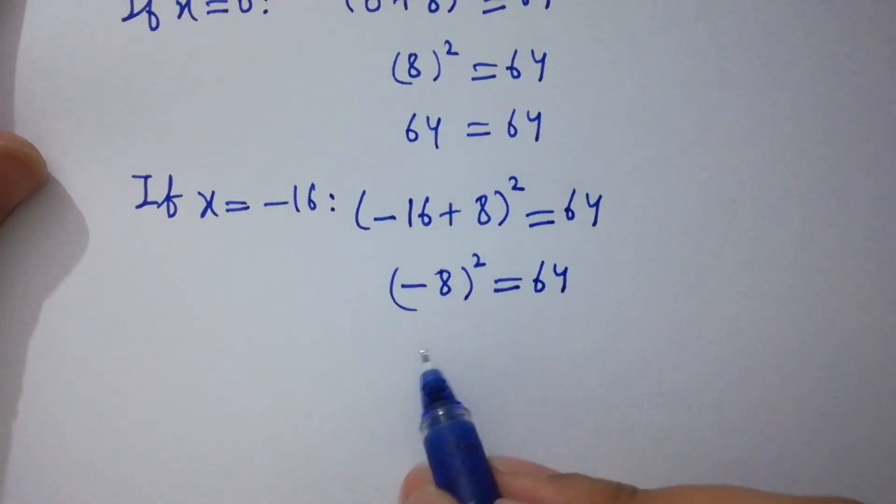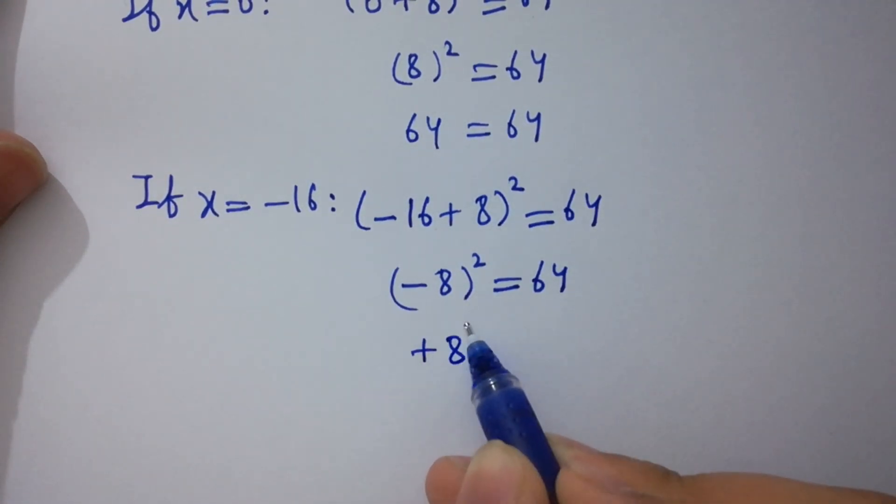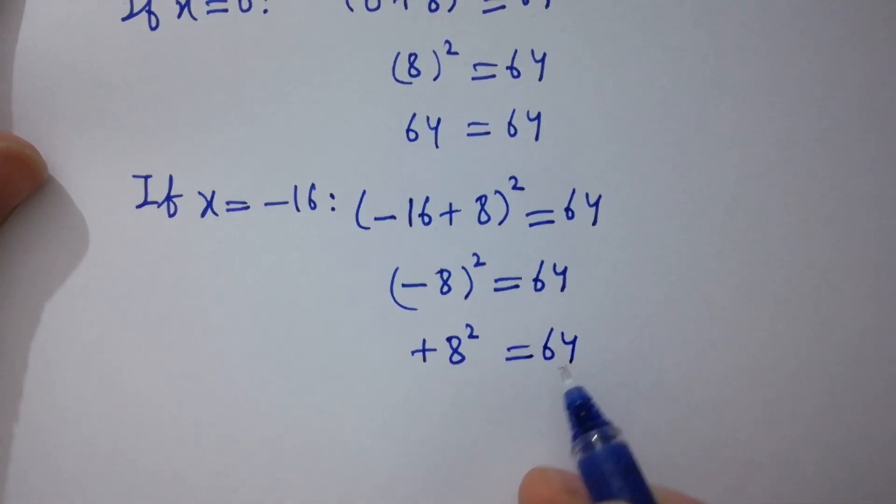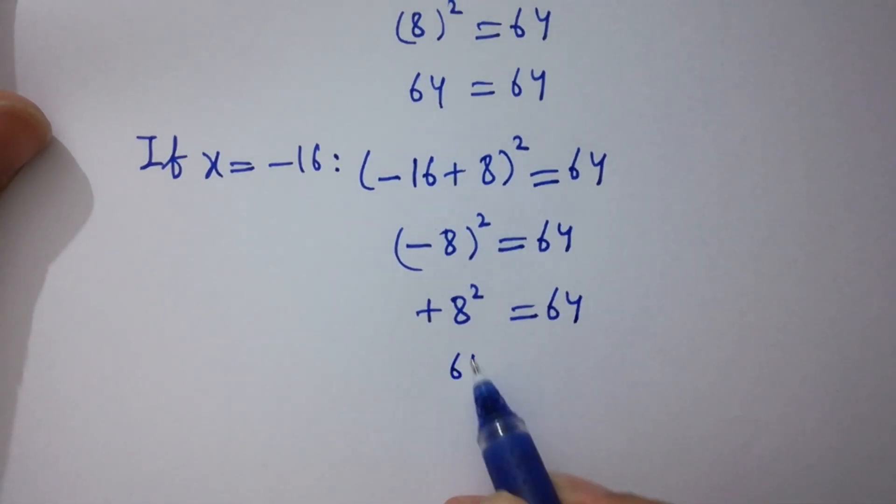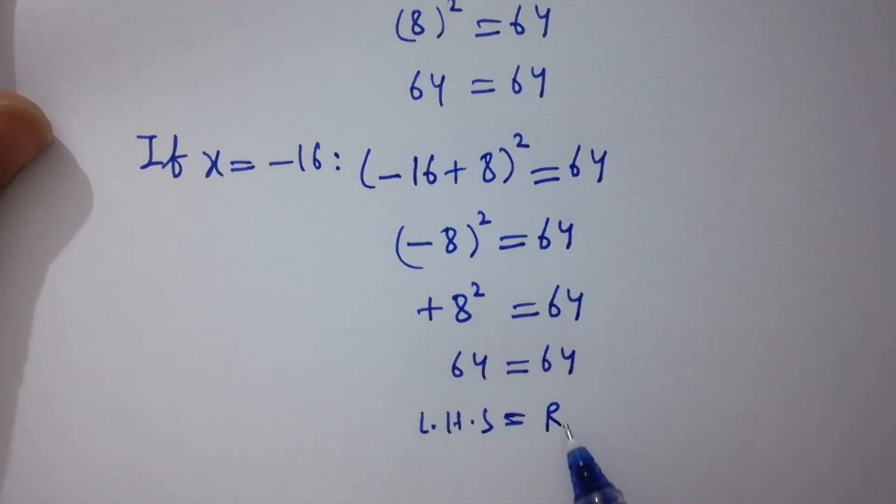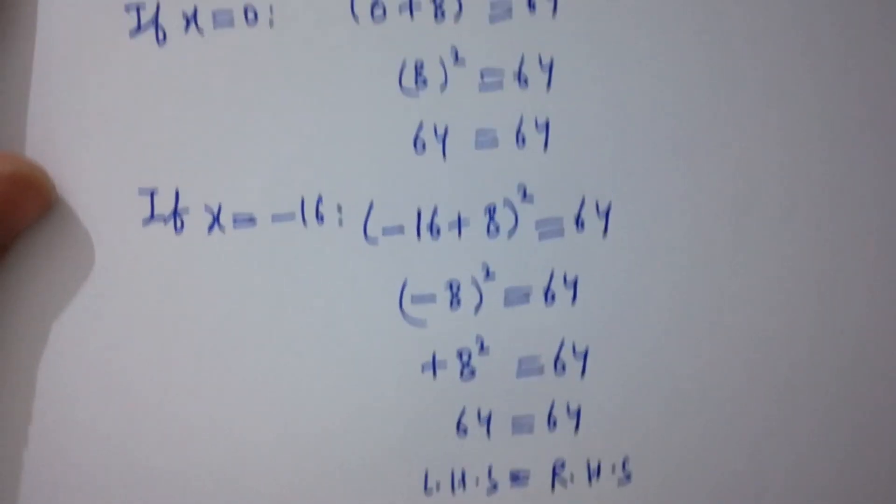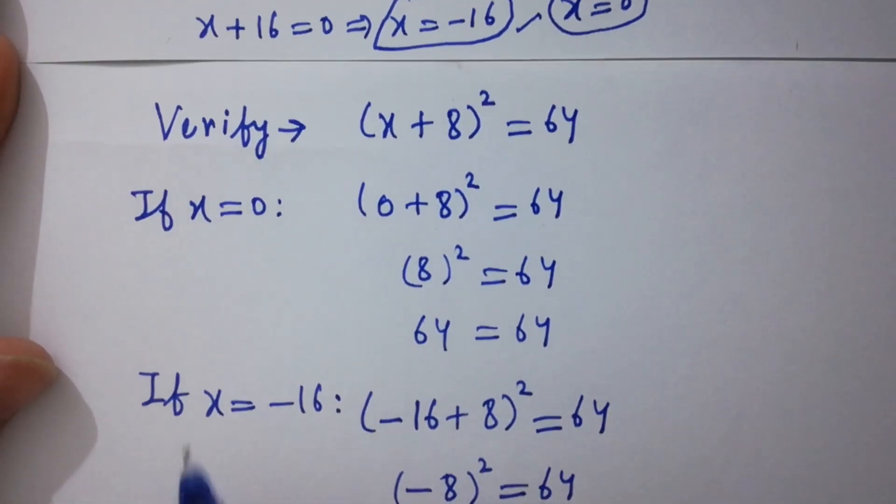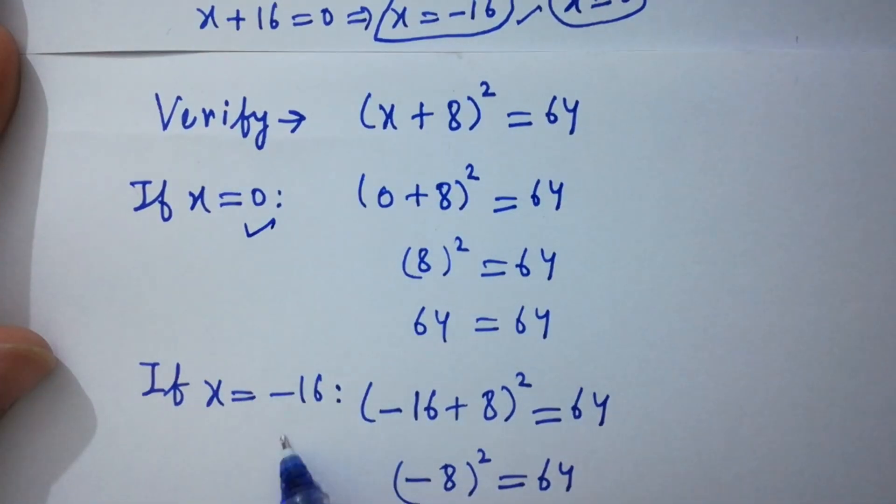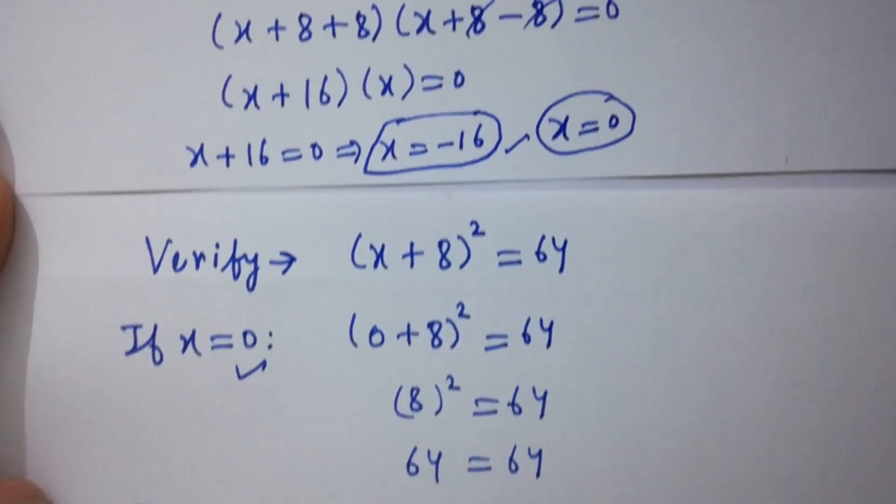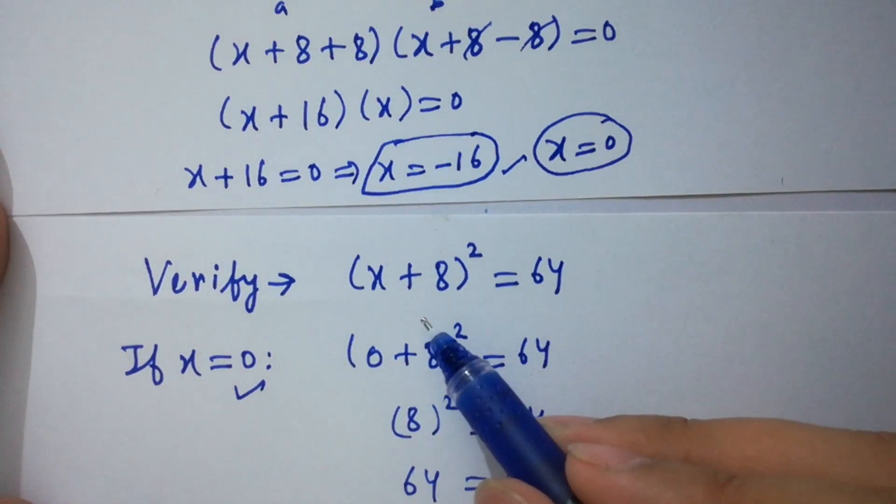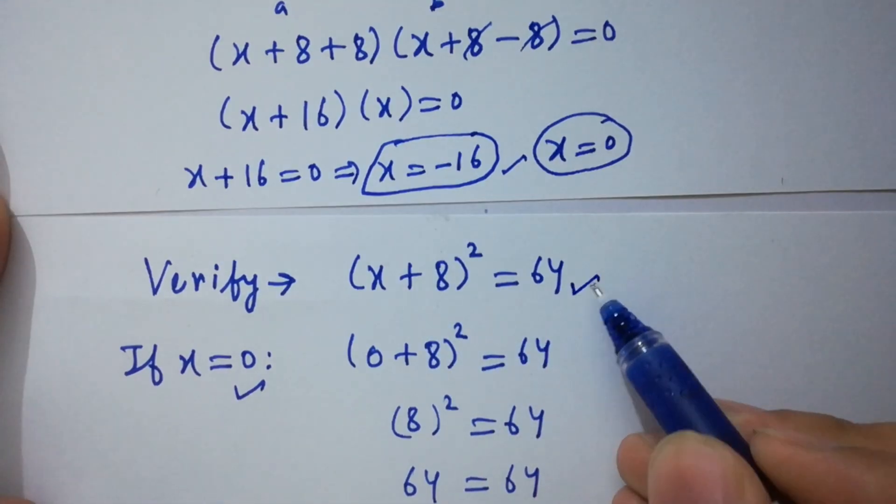8² = 64, so 64 = 64. Left hand side equals right hand side, which shows that the values x = 0 and -16 satisfy the equation (x + 8)² = 64.